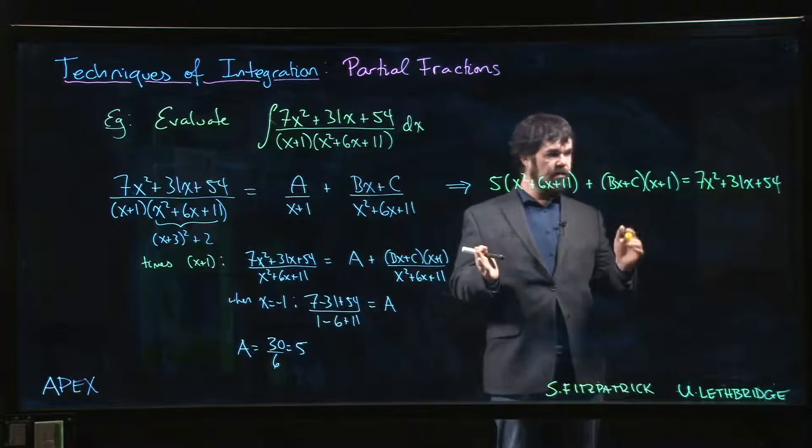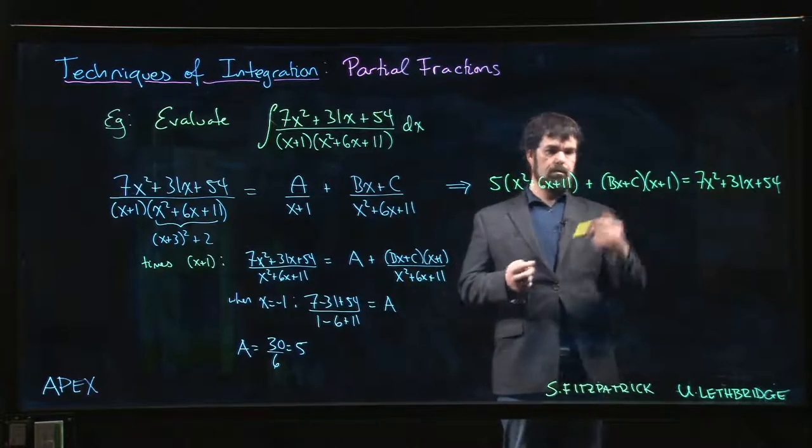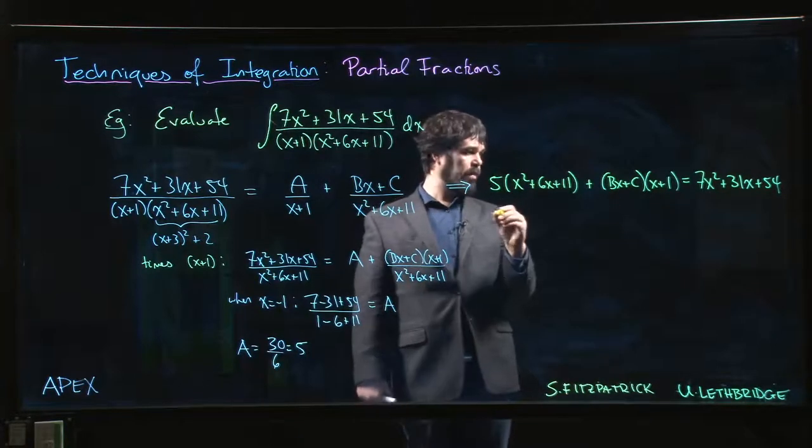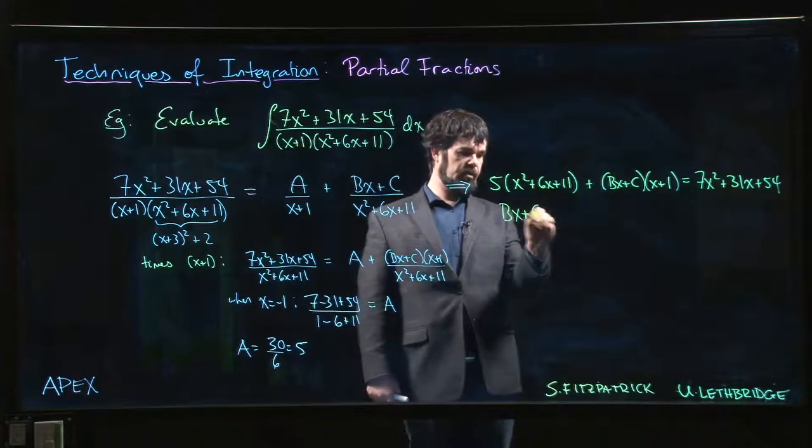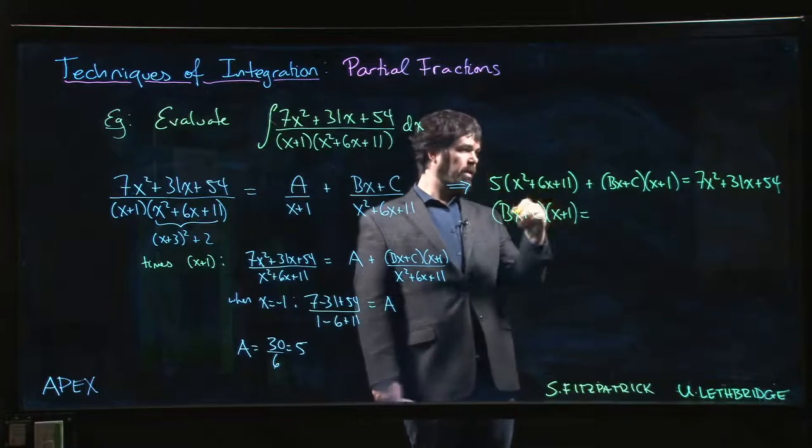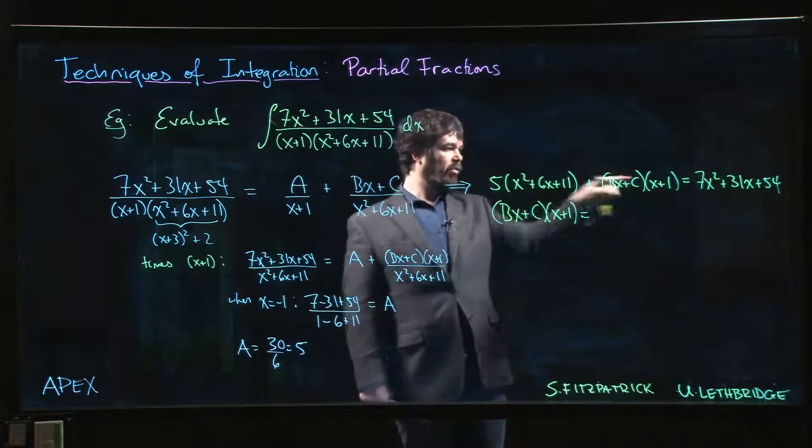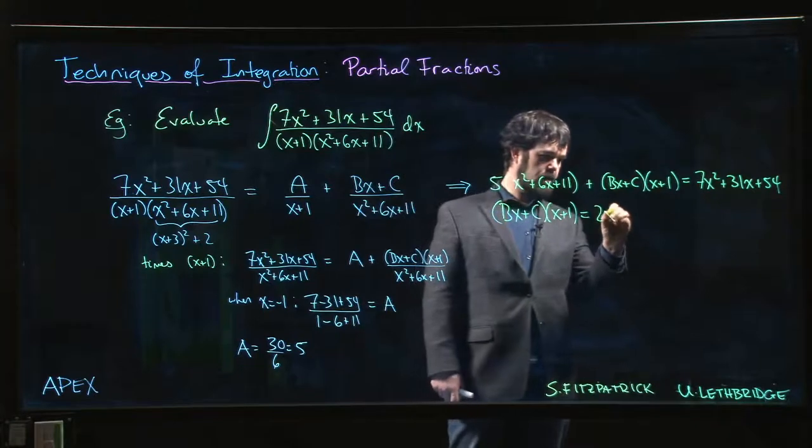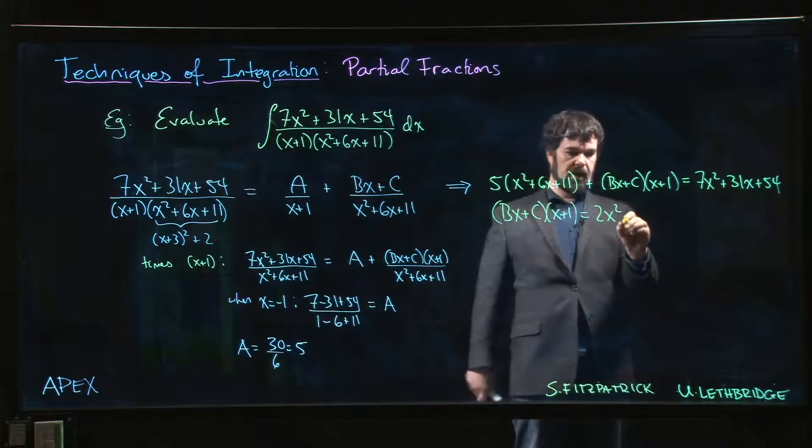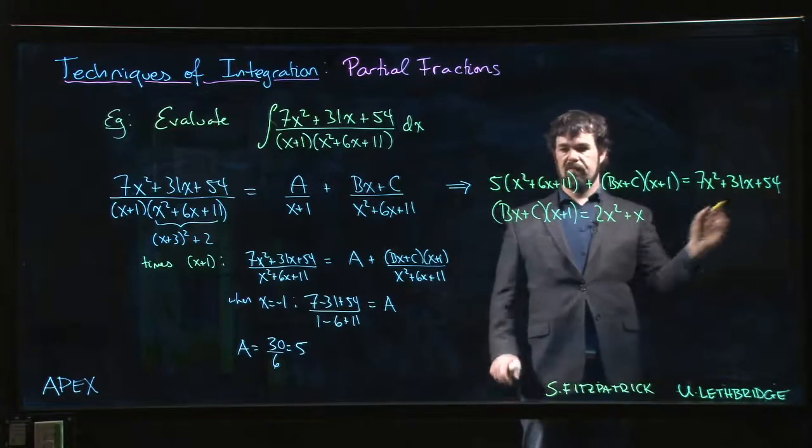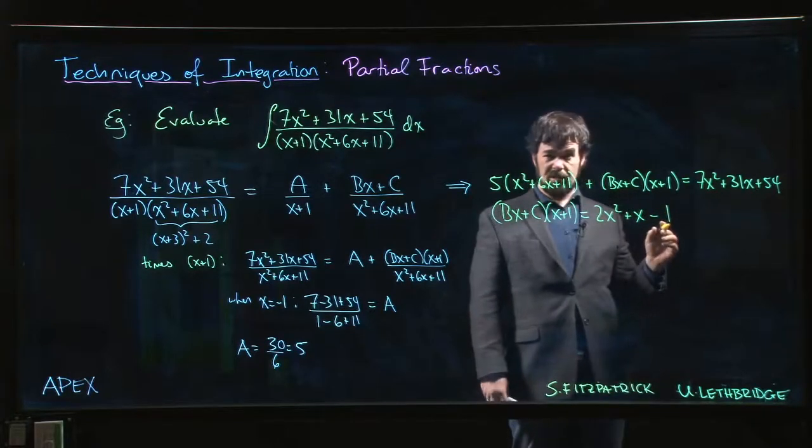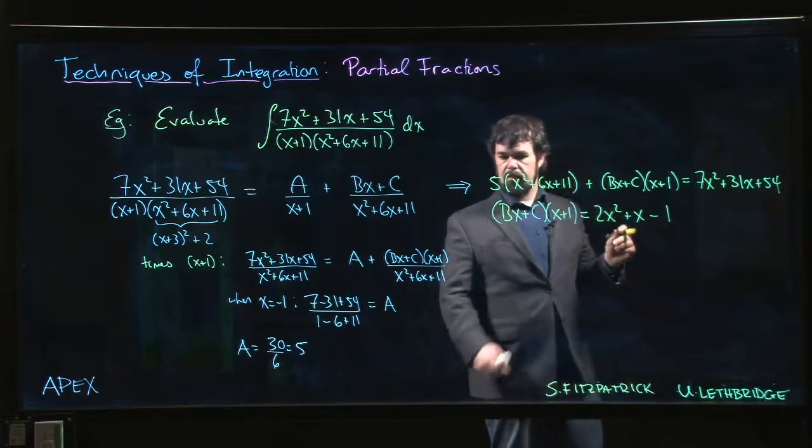So now we can try plugging in values to try to solve for Bx plus C. What we can do is we can clean this up a little bit before we do that. So Bx plus C times x plus 1. Let's multiply the 5 through and subtract. So 7x squared minus 5x squared is 2x squared. 31x minus 30x is just x. 54 minus 55 is minus 1. Well, that's a lot easier to work with, isn't it?